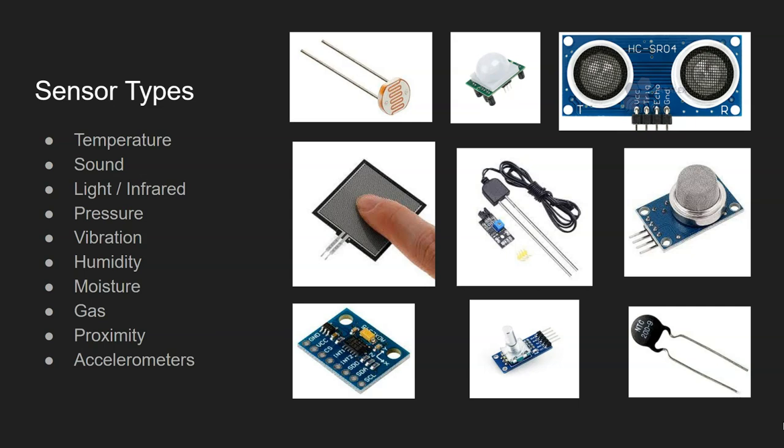Moisture sensors are also found in mobile phones — if your phone gets wet and you try to charge it, it will pop up with a warning that moisture has been detected in the charge port and you'll have to wait until it's dry. Gas sensors are really common: methane sensors are used in mines, where a buildup of methane can be dangerous, and carbon monoxide sensors are very common in the home, usually in a kitchen or near a gas boiler, setting off an alarm if dangerous levels are reached.